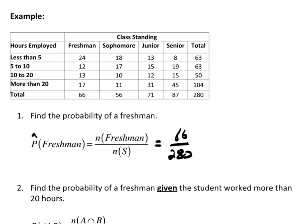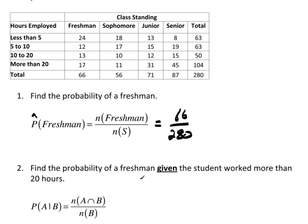Now, let's look at conditional probability. Find the probability of a freshman given the student worked more than 20 hours. So how do we do that? Let's talk about it conceptually first, and then I'll come back to this notation. So I want the probability of a freshman given the student worked more than 20 hours. Well, this is my entire universe.